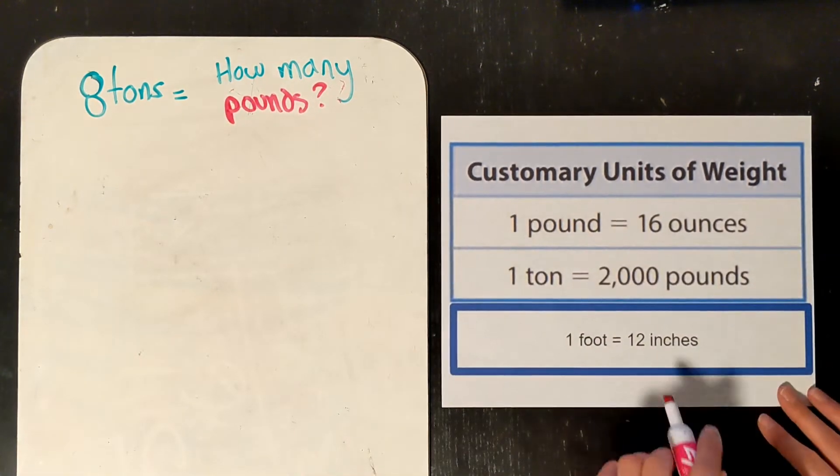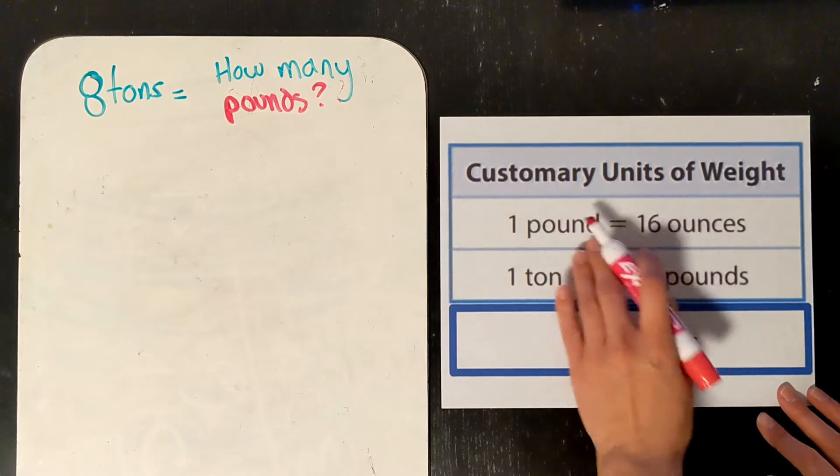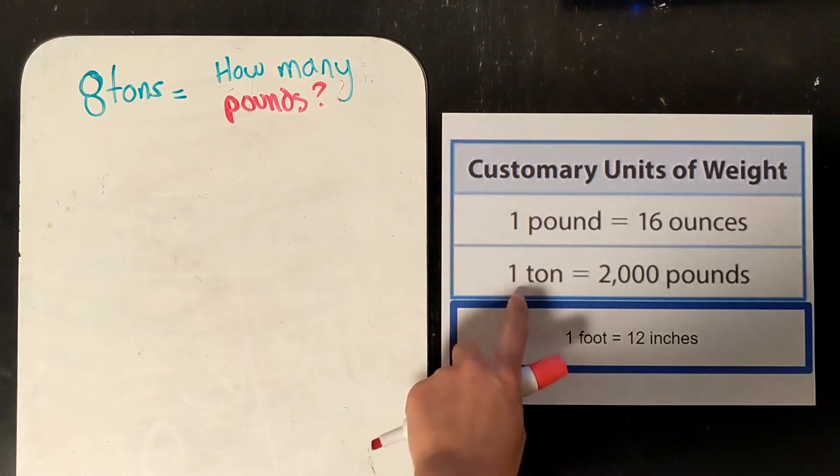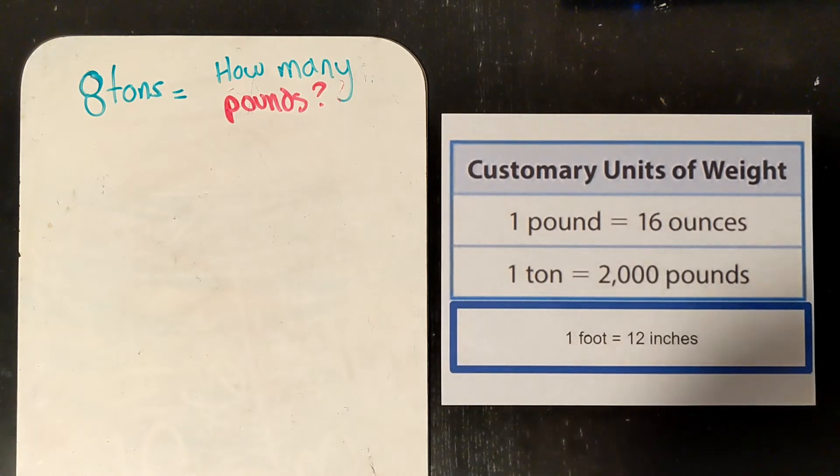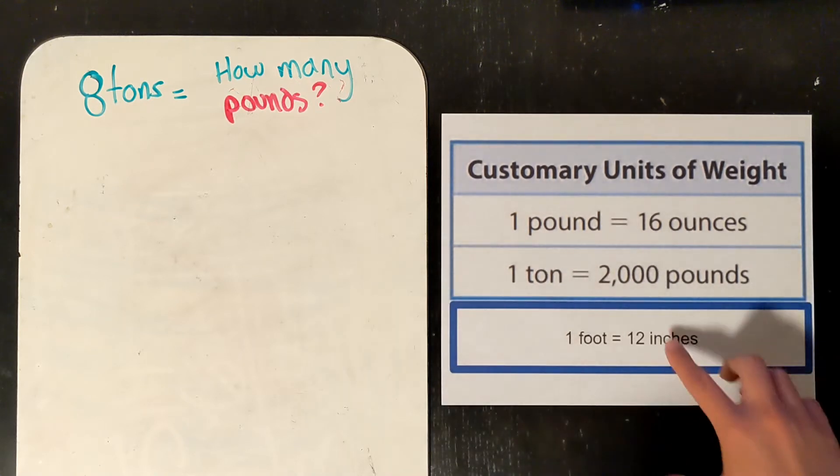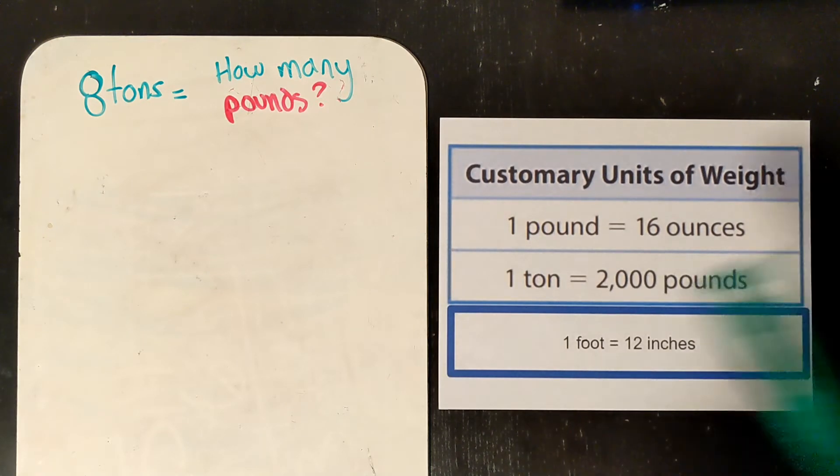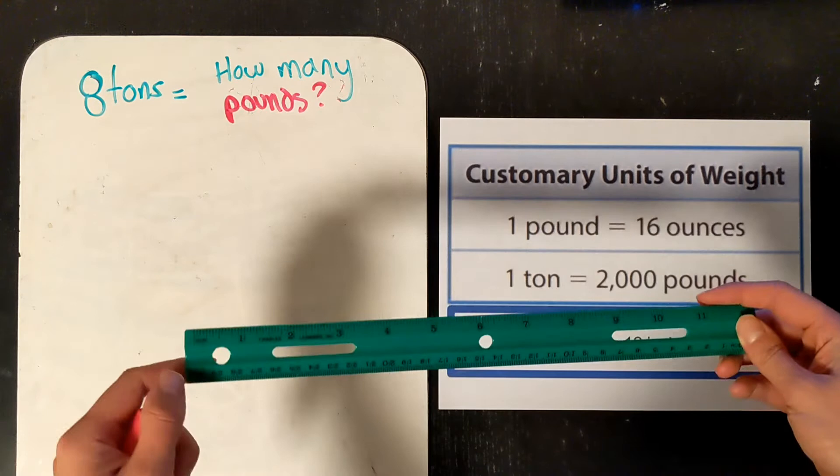All right, so 16 ounces equals 1 pound. So if I have a pound of sugar, I have 16 ounces of sugar. A ton is 2,000 pounds. So if someone says that elephant weighs a ton, well, 1 ton is 2,000 pounds. And a foot, this is a foot, and a foot is 12 inches.